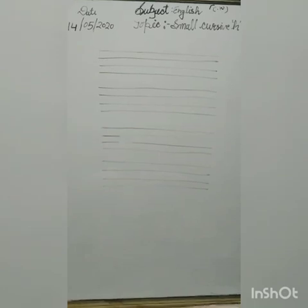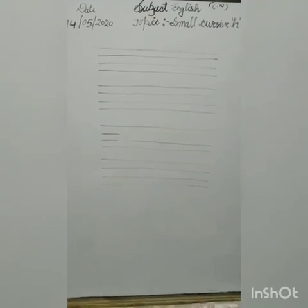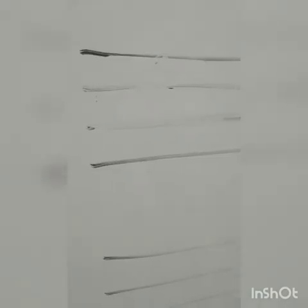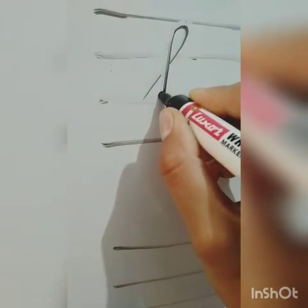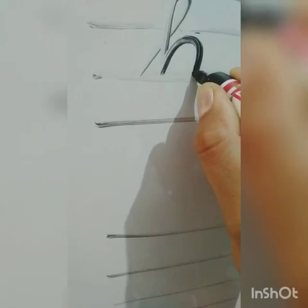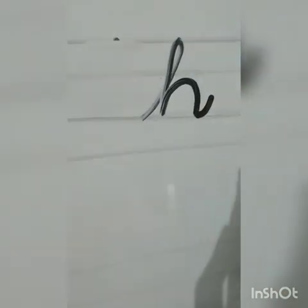As you have done your small cursive B in yesterday's video, today we will write small cursive H. First you make L, then go up, and turn it like this, and a small tail. You have to do it like this, as I have done on the board.